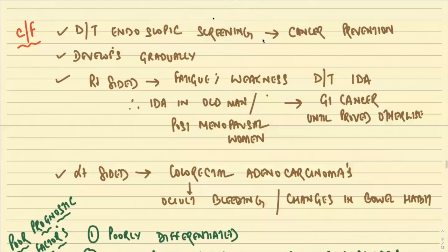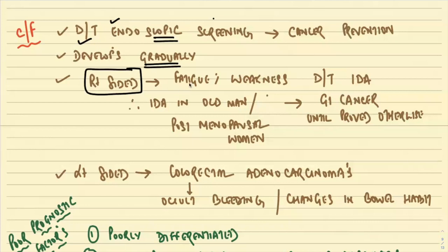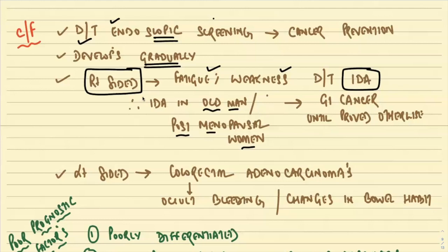Clinically, the incidence of colorectal carcinoma has come down because of endoscopic screening, as the tumor takes a long time to develop. Right-sided colorectal carcinoma bleeds a lot but does not cause obstruction, so it presents with fatigue and weakness due to iron deficiency anemia. Always remember: iron deficiency anemia in an old man or a post-menopausal woman is colorectal carcinoma or GI malignancy until proved otherwise.